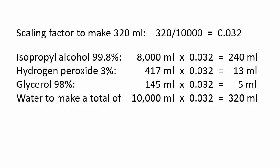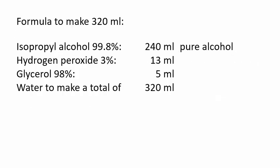The previous video showed how to scale down the World Health Organization hand sanitizer formula to make any amount, assuming you have a supply of pure or 99% isopropyl alcohol. Alcohol is sold in different strengths, such as 99, 91, or 70%. For the weaker solutions, you need to add more milliliters to get the same amount of alcohol.